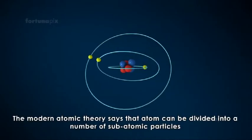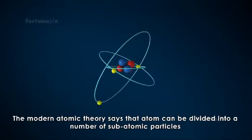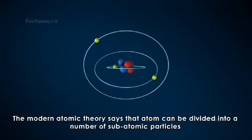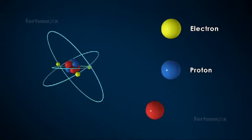The modern atomic theory says that atoms can be divided into a number of subatomic particles, such as electrons, protons, and neutrons.